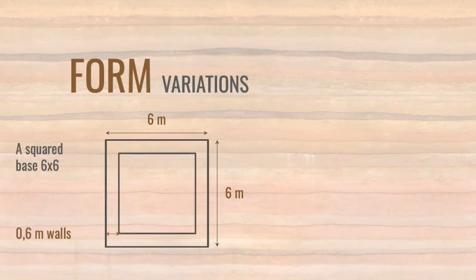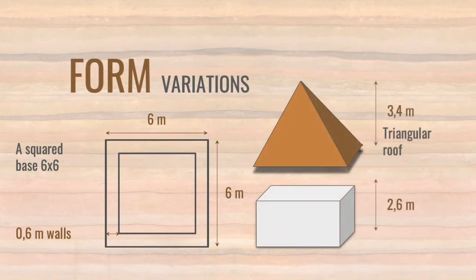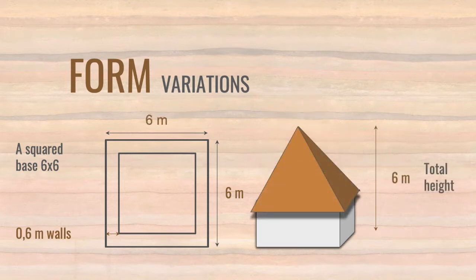As we moved forward with our experimentation and began to link our cube to the materiality and constructive qualities of Earth, 60 cm self-supporting perimeter walls were born. Then the roof emerged with a triangular form, from the chiseling of the upper part of the cube, a reference to roofs of traditional Portuguese earthen homes, which fit perfectly with our square floor plan. The building became divided into two parts: a roof section with a 3.4 meter height, and the bottom living area with a 2.6 meter height.